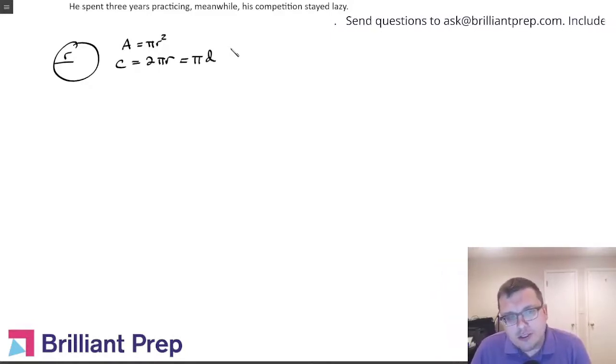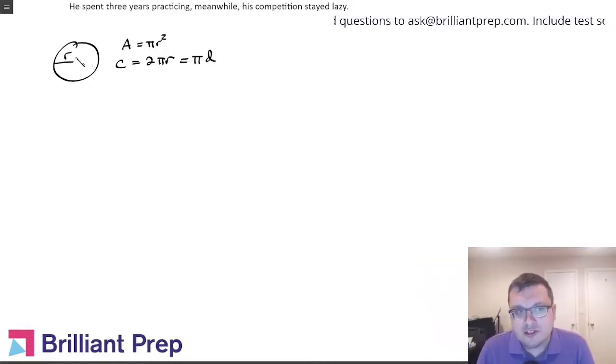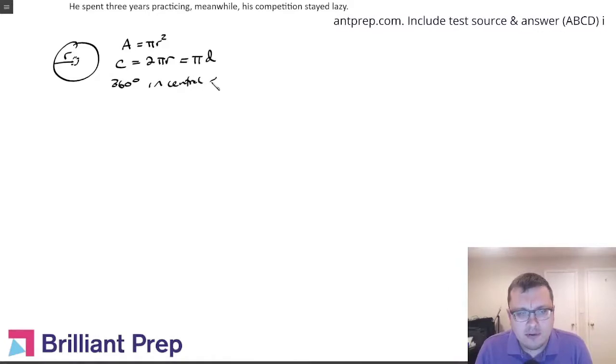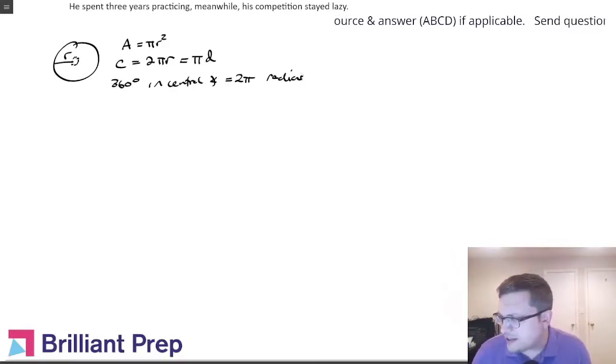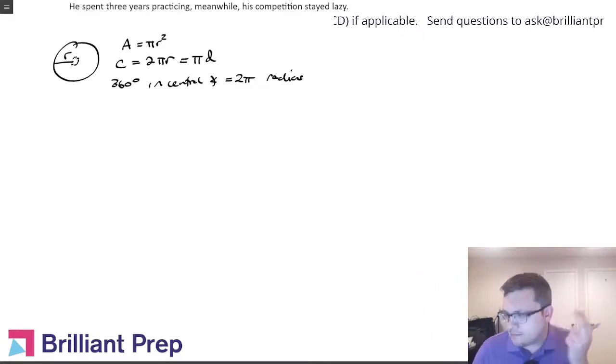They also tell you that there's 360 degrees in the central angle of a circle, and that's the same thing as 2 pi radians. Number of degrees of arc is 360, number of radians of arc is 2 pi.